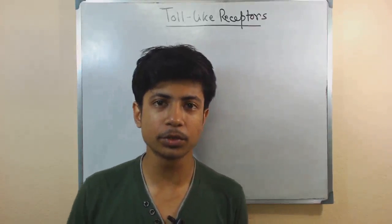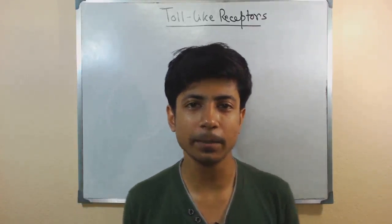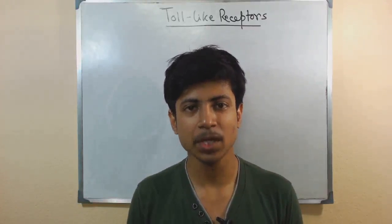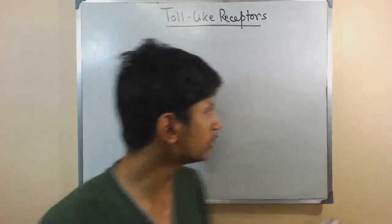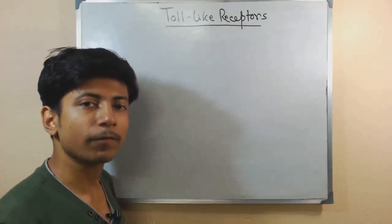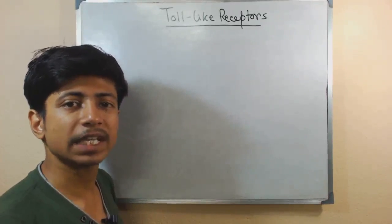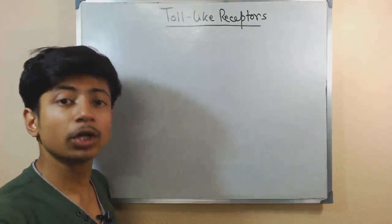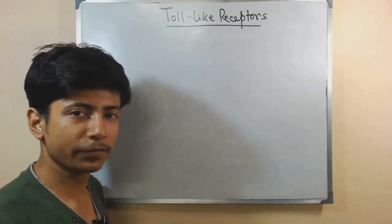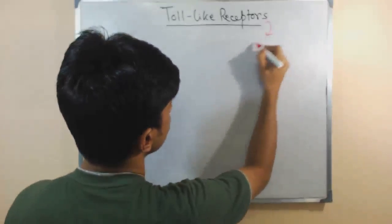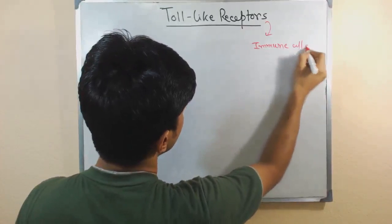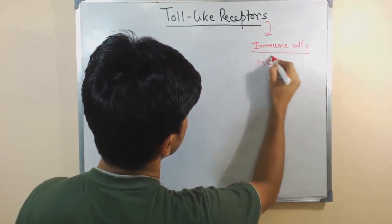In this video tutorial we'll be talking about Toll-like receptors, better known as TLRs. What are TLRs? As the term suggests, they are a kind of receptor molecule found on the surface of cell membranes — not all cells, but specifically on the surface of immune cells, like macrophages.